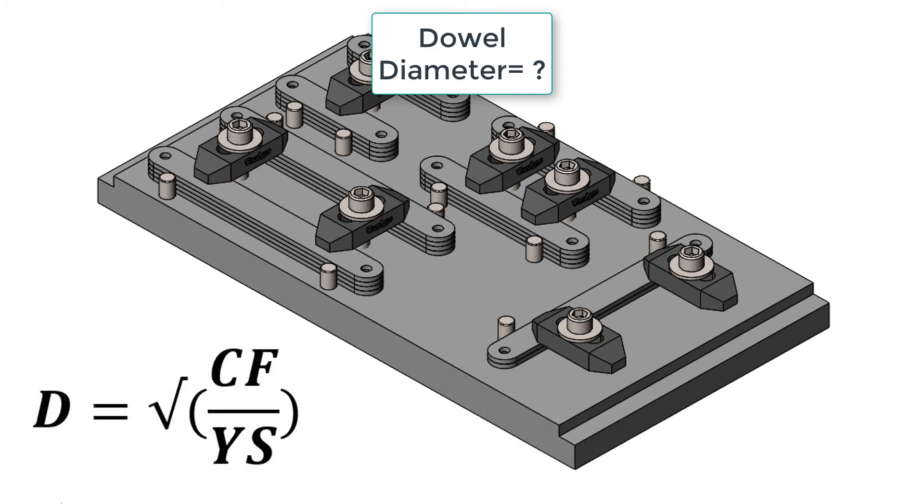Since we know how to calculate the cutting force, and the material yield strength can be looked up in a table, we can now rearrange this equation to calculate the minimum diameter of the dowel. So the dowel diameter now equals the square root of the cutting force divided by the yield strength.